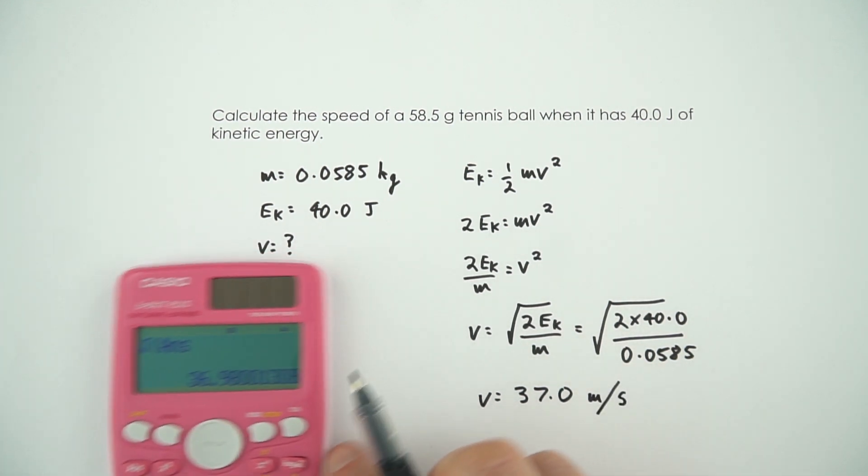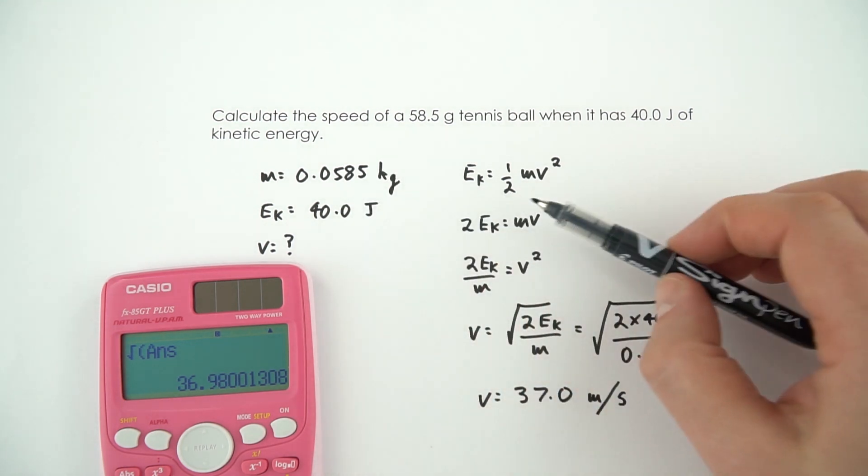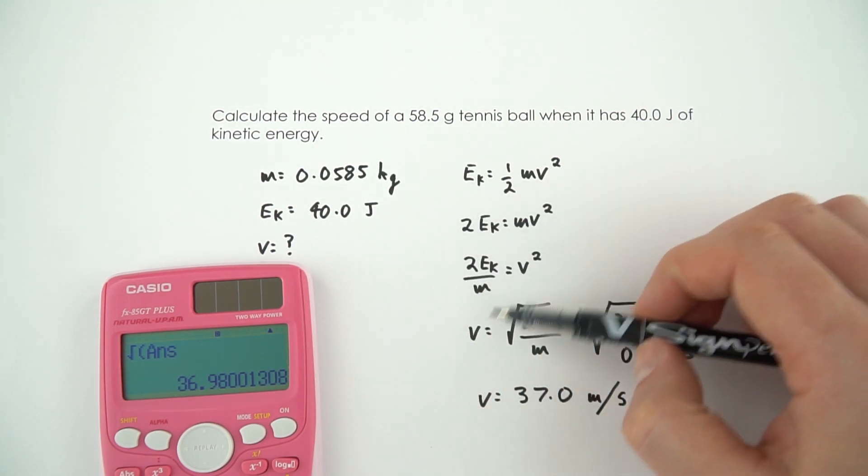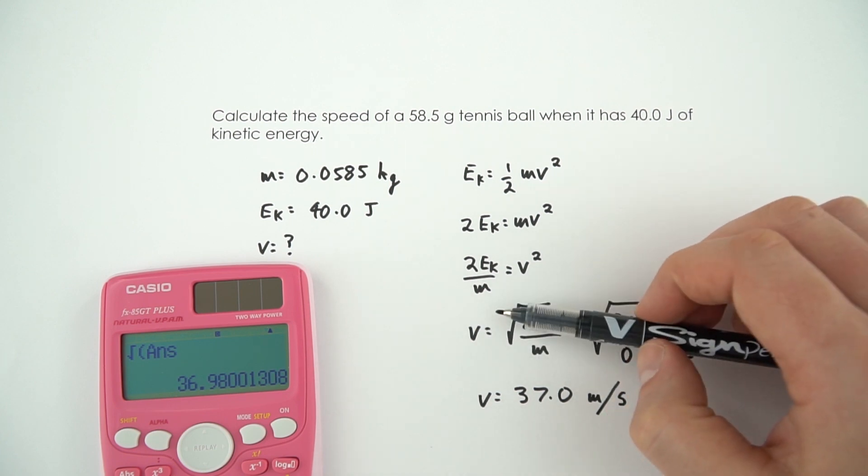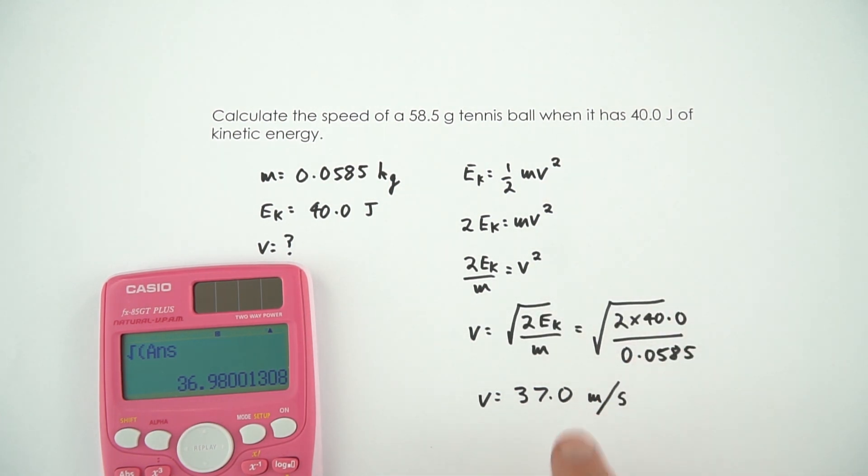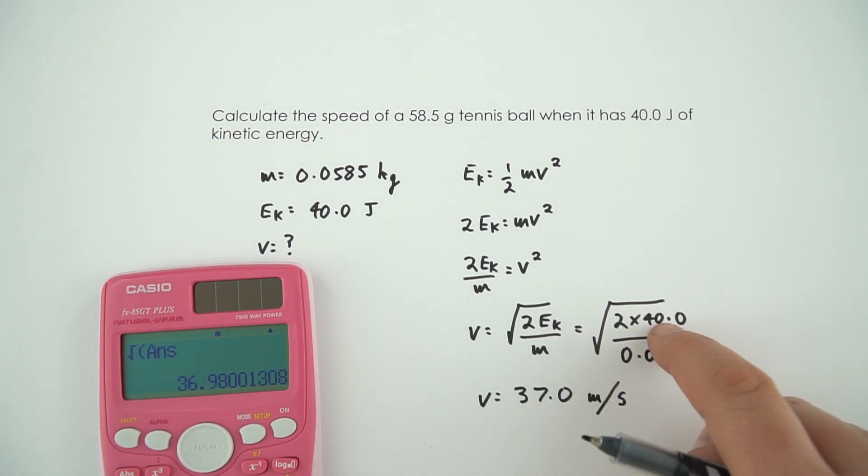It is worth writing out the equation and everything that you know. Spend a bit of time to actually rearrange this. And this is probably the most complicated equation that you have to rearrange in GCSE physics. You put the numbers in, and then you find your answer, and make sure that you do square root whatever number is in here. So yeah, 37.0 metres per second.